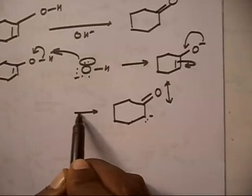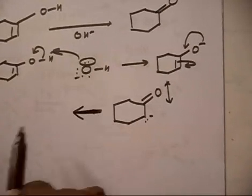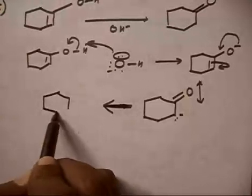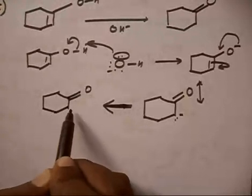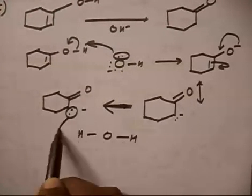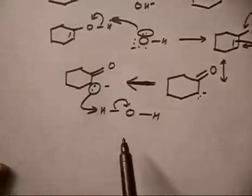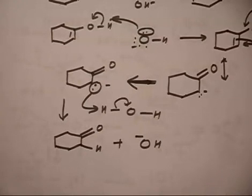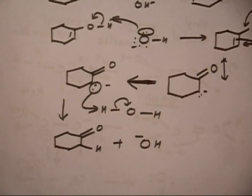In the next step, the carbanion takes H+ from water, because this is base-catalyzed. In the first step we used one OH minus; in the last step we release one OH minus, regenerating the catalyst. This confirms it is a base-catalyzed reaction. So whether in acidic or basic medium, vinyl alcohols isomerize to ketones.